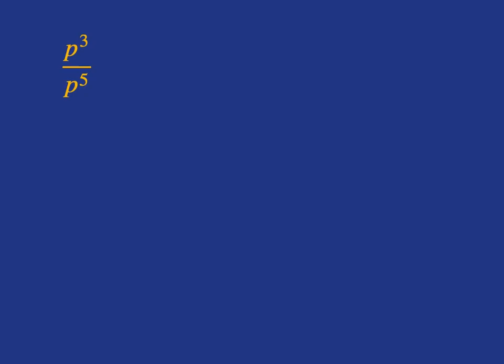Let's look at another example. If we had p³ over p⁵, and we wrote out what that means, and then did our cancellation, you will see that what we have left is 1 over p².